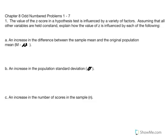Let's first consider the equations we are referring to. Standard error is equal to standard deviation over the square root of n. Z is equal to sample mean minus population mean divided by standard error. So part A asks about an increase in the difference between the sample mean and the original population mean — what are the effects on z?